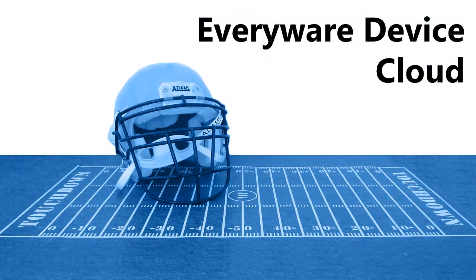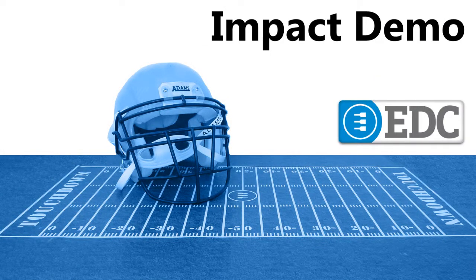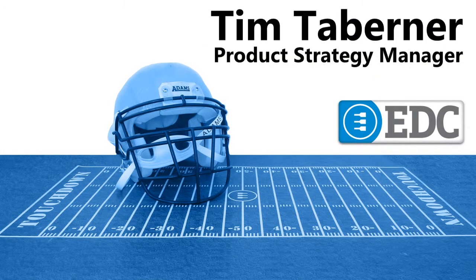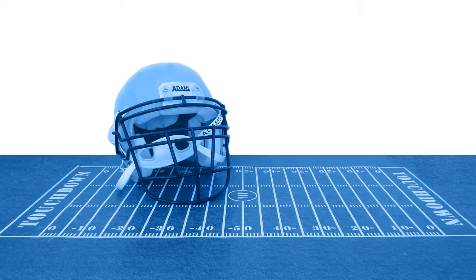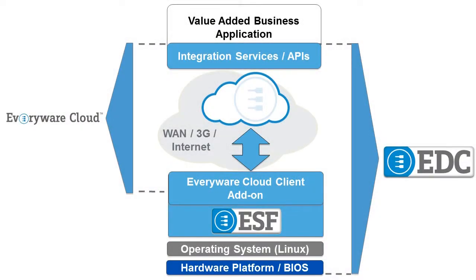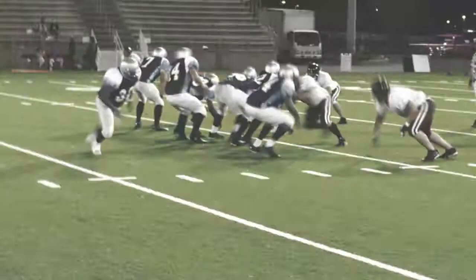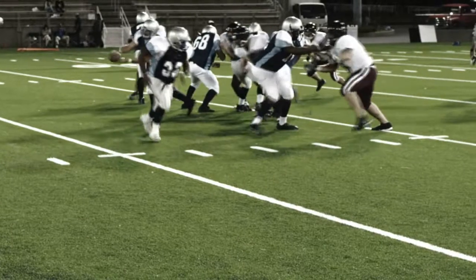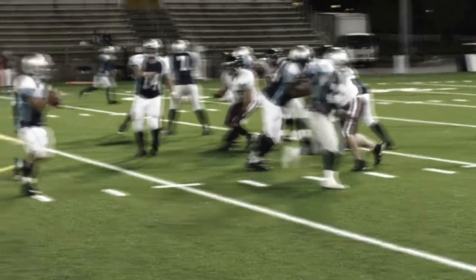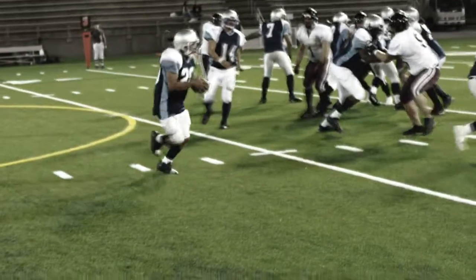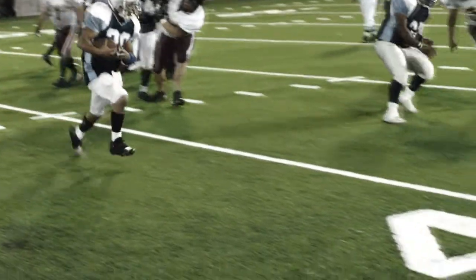What we have here is one slightly left-field application of our Everywhere Device Cloud, or EDC, which is a machine-to-machine integration platform. EDC has been designed to enable the exchange of data from real-world things, either directly or via a gateway device, with other applications and devices in a format that can be easily consumed by those users.